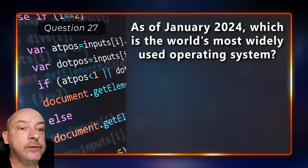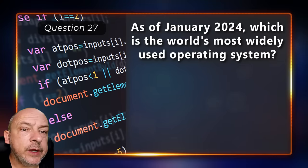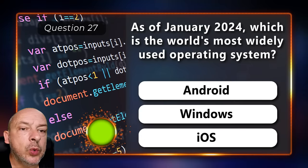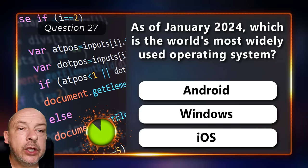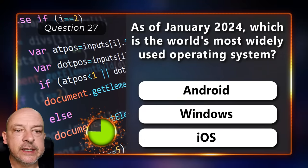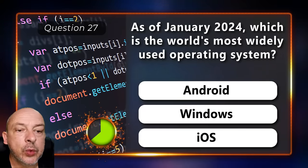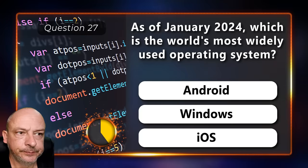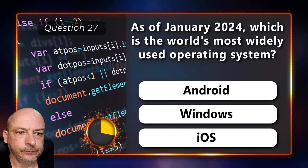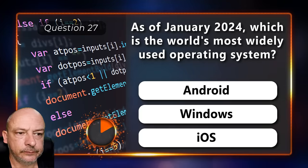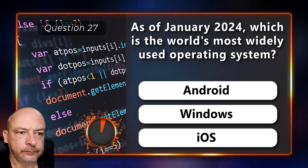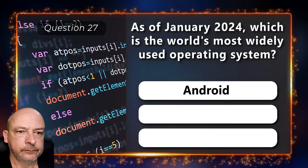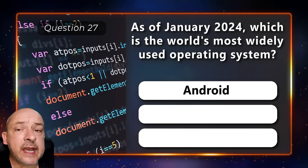As of January 2024, which is the world's most widely used operating system — Android, Windows, or iOS? The correct answer is Android.